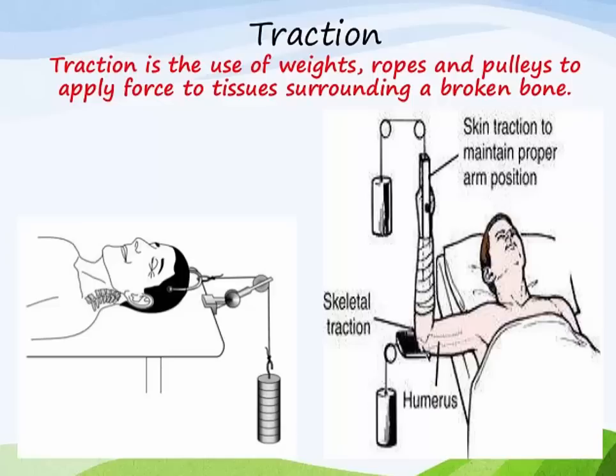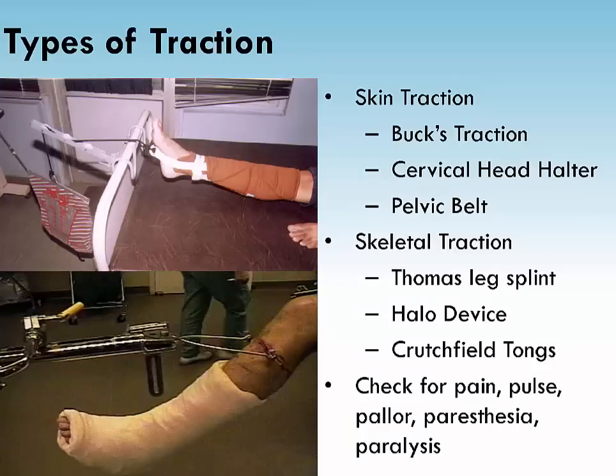For the patient in skeletal traction, assess the pin site for signs and symptoms of infection. Skin traction requires pressure on the skin to maintain the pulling force across the bone. Skin traction, like Buck's traction or pelvic traction, involves weight applied and held to the skin with a Velcro splint. A maximum of 10 pounds of weight may be applied using this method. More than that could result in skin excoriation, blister formation, and pressure sores. If more than 10 pounds of weight is needed to control the fracture, skeletal traction is required.